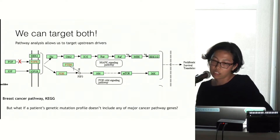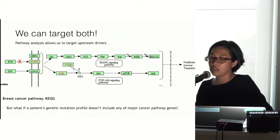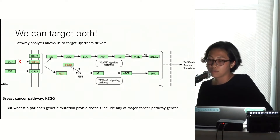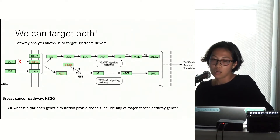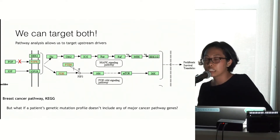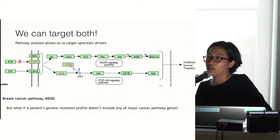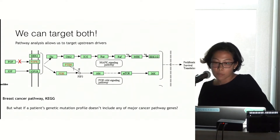In this case, we have the breast cancer MAP-K signaling pathway, which is actually a pathway overexpressed in lots of cancers, and it leads to proliferation, survival, and translation — which is what drives tumor development.